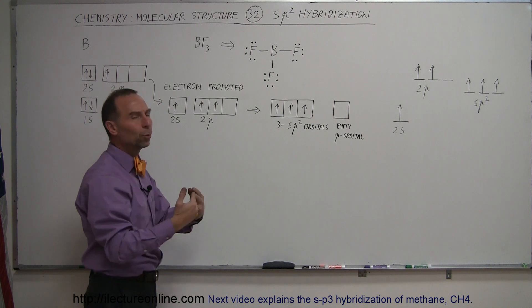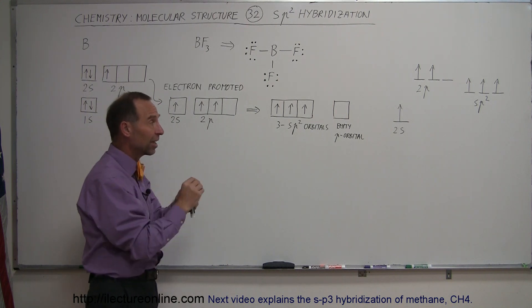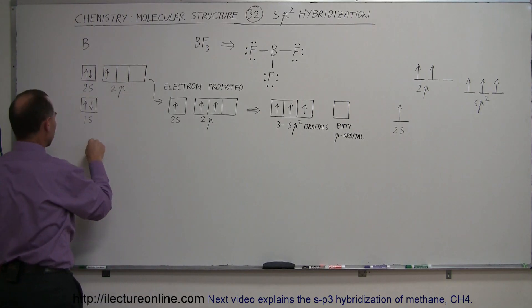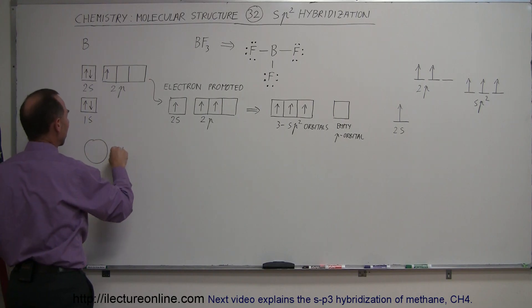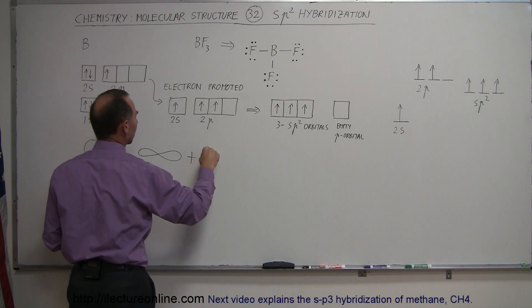And they then get each filled with a single electron, and all three sp2 orbitals are exactly the same in shape. So you take an S orbital and two p orbitals. Remember, an S orbital is spherical in shape. And then you take a p orbital like this, and you take a p orbital that looks like this.